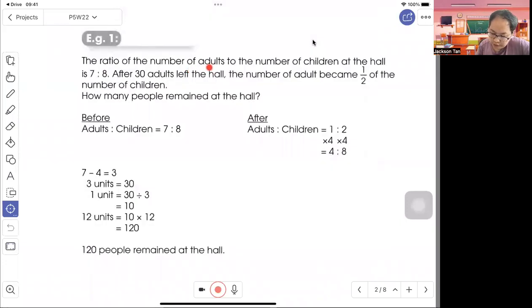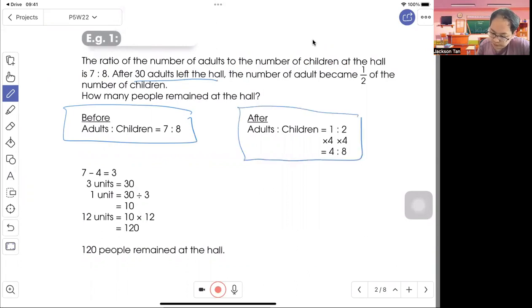The ratio of the number of adults to the number of children at the hall is 7 to 8. When you're working, make sure you write before 7 to 8. After 30 adults left the hall, the adults become half the number of children, means that adult to children is 1 to 2. How many people remain at the hall?